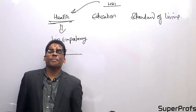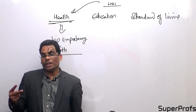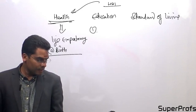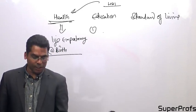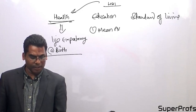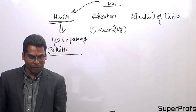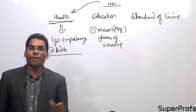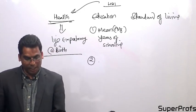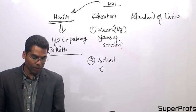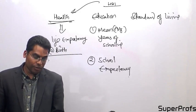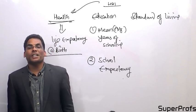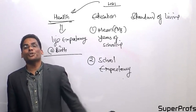Under education, there are two indicators. First is mean years of schooling — the average number of years a person has spent in school. Second is school expectancy — how many years of schooling a child entering school can expect to complete. These together form the education index.